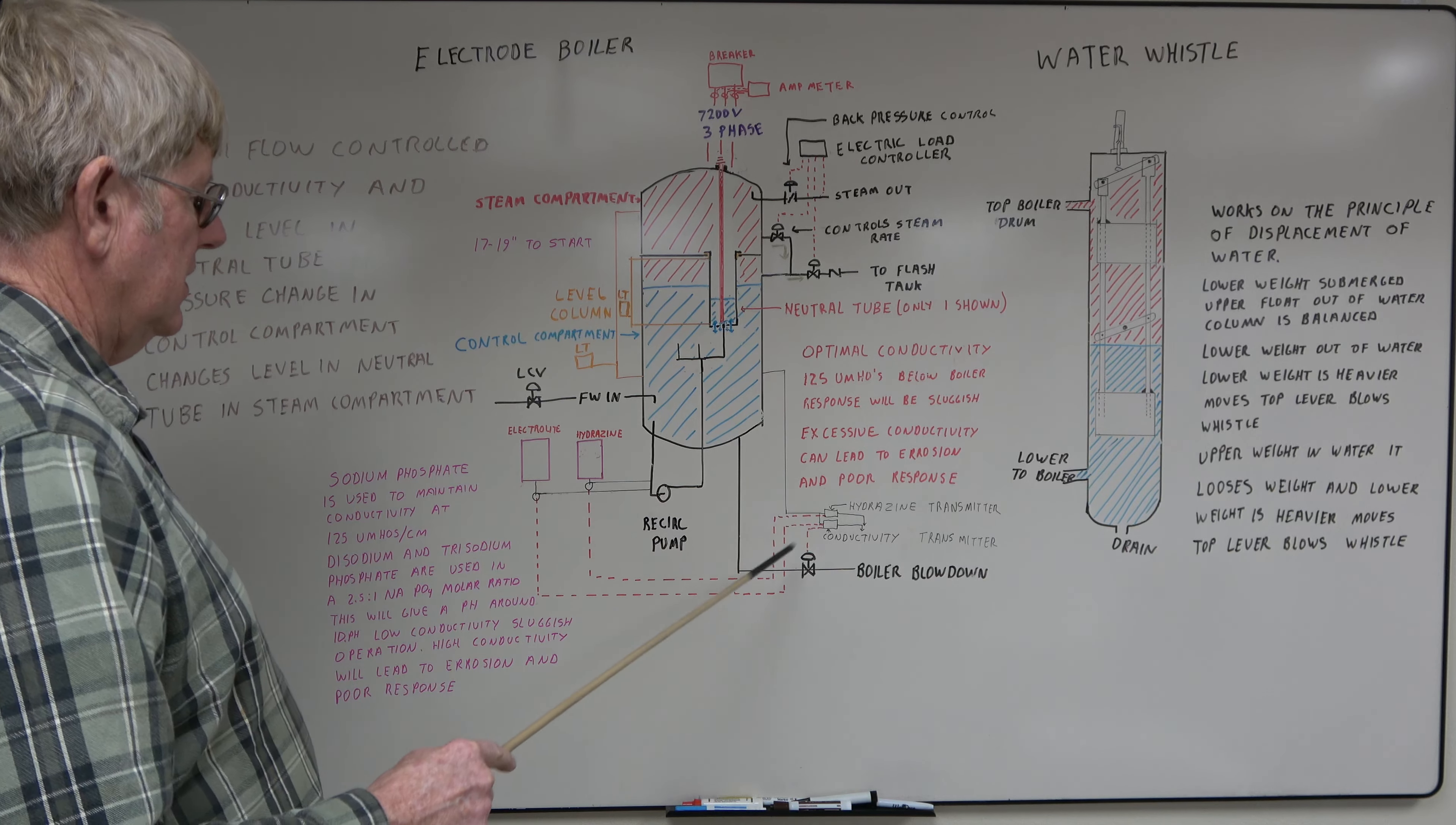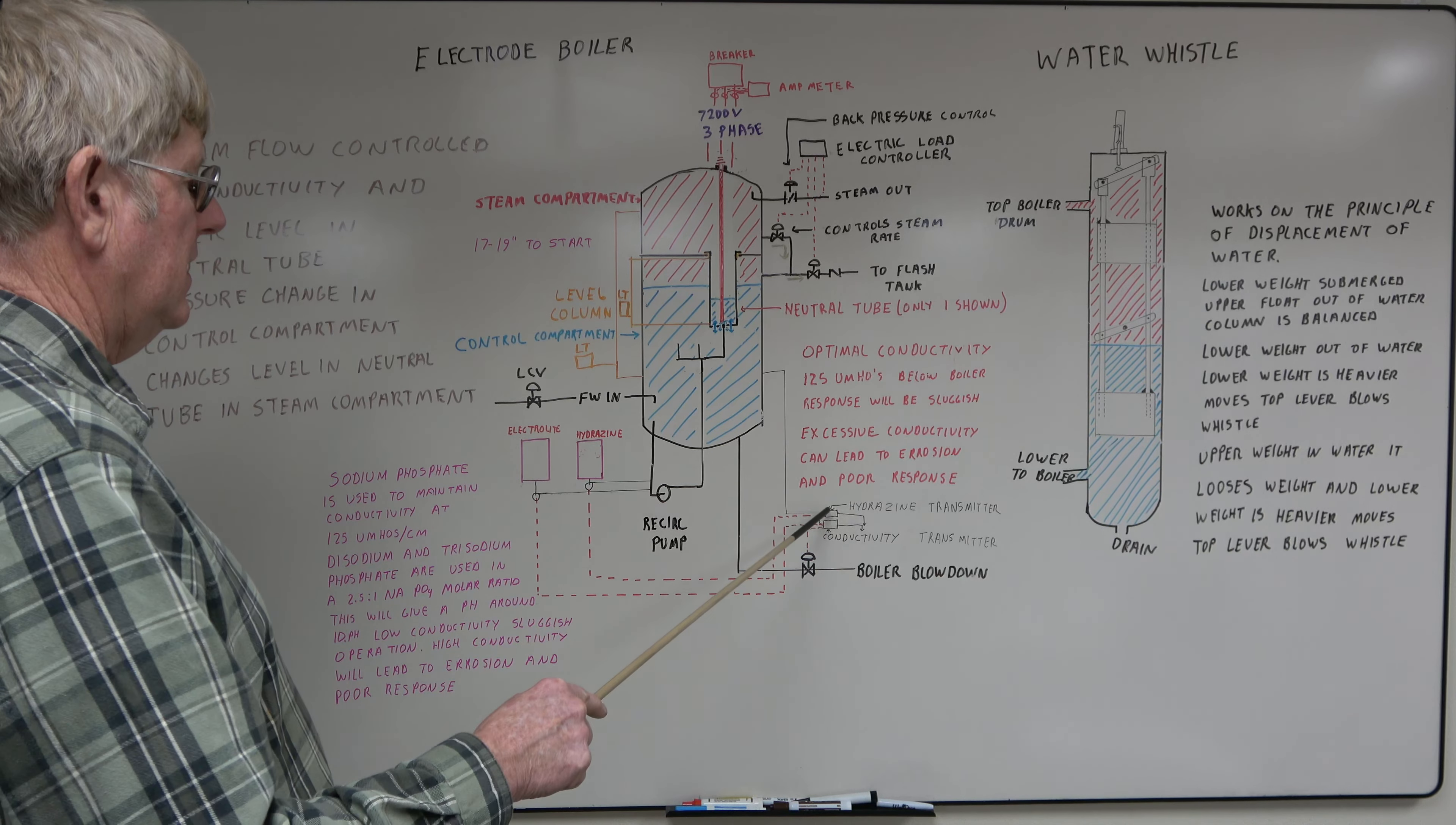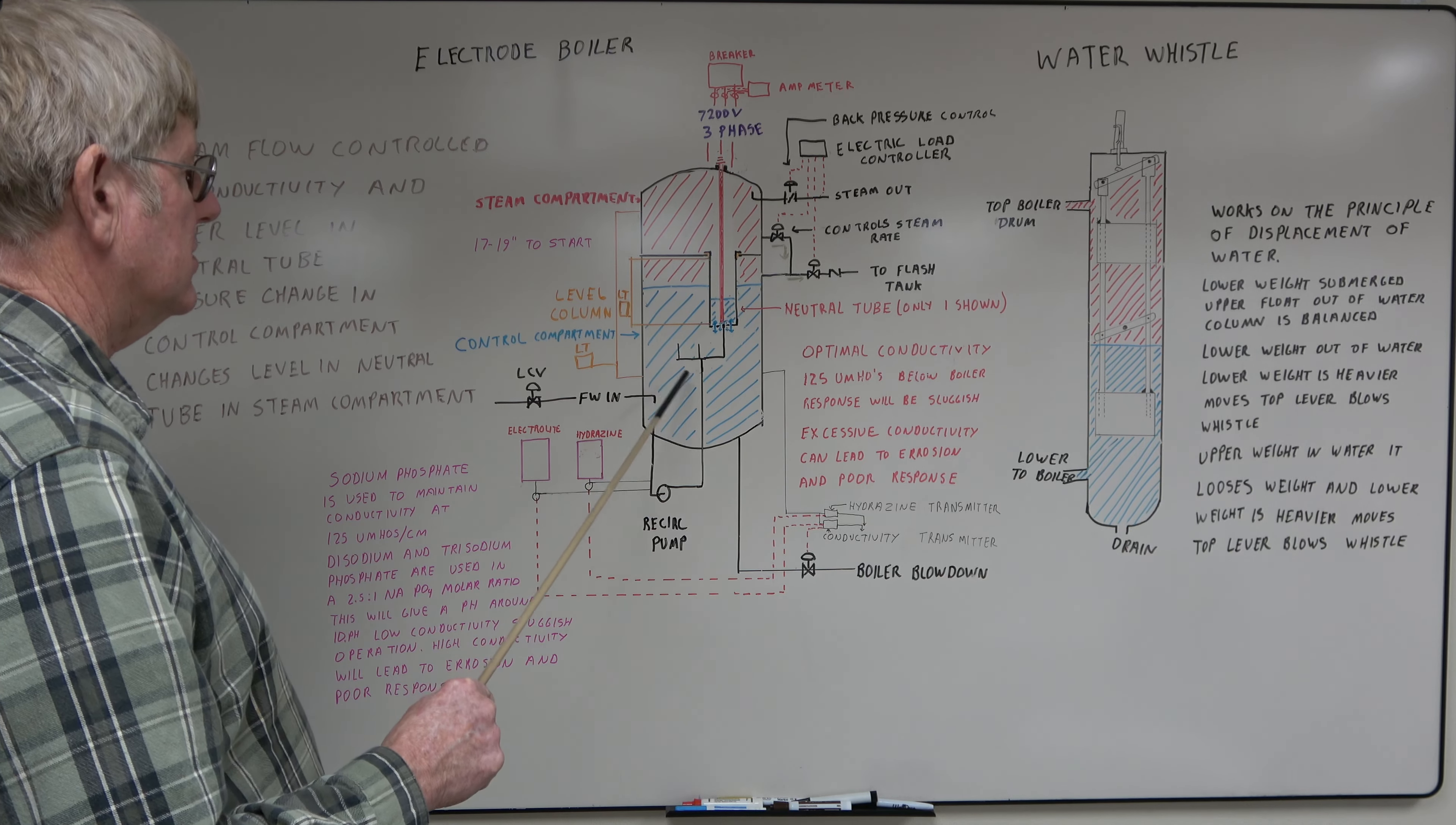This drawing here shows a conductivity transmitter. You have a constant sample flow going through. It runs your boiler blow down. If it gets too high, it dumps water. If it gets too low, it'll run the electrolyte pump and bring electrolyte in. You have a hydrazine transmitter. Hydrazine pump maintain hydrazine levels. Oxygen is really detrimental to these neutral tubes for electrodes and the shells. So these two chemicals really have to be monitored and used.